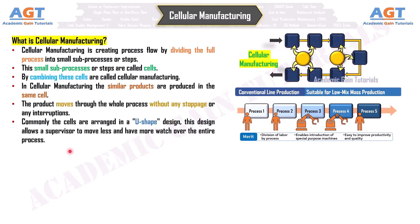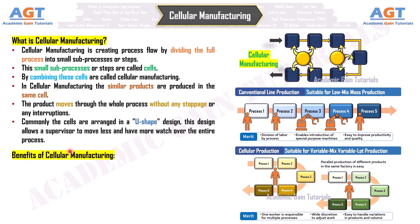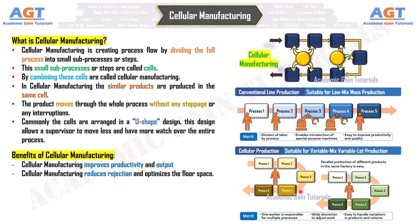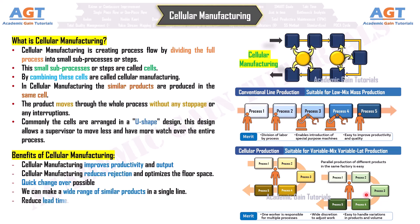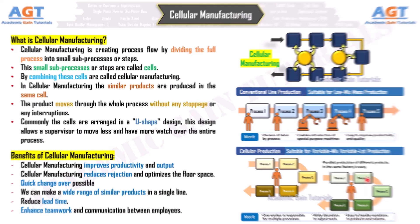Benefits of Cellular Manufacturing: Cellular manufacturing improves productivity and output. It reduces rejection and optimizes the floor space. Quick changeover is possible, and we can make a wide range of similar products in a single line. It also reduces lead time and enhances teamwork and communication between employees.